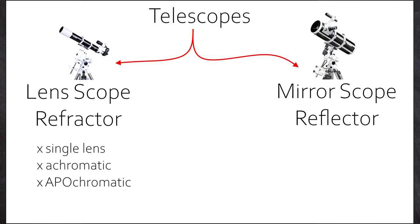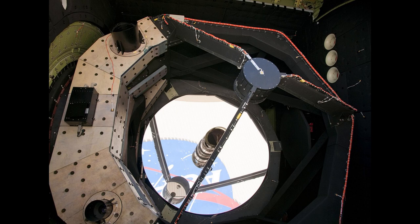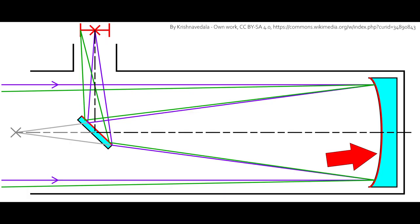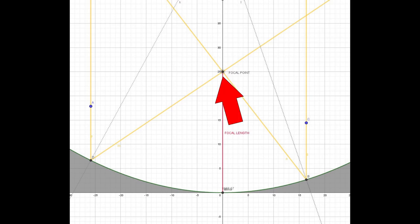These are the lens scopes. Single lens, achromatic and apochromatic refractors. The second big branch are the mirror scopes or reflectors. They use a totally different approach to gather light. They don't refract it, they reflect it. And using a curved surface, mostly parabolic, they are able to concentrate all incoming light into one point. Again, this point is our focal point and the distance primary mirror to focal point is our focal length.